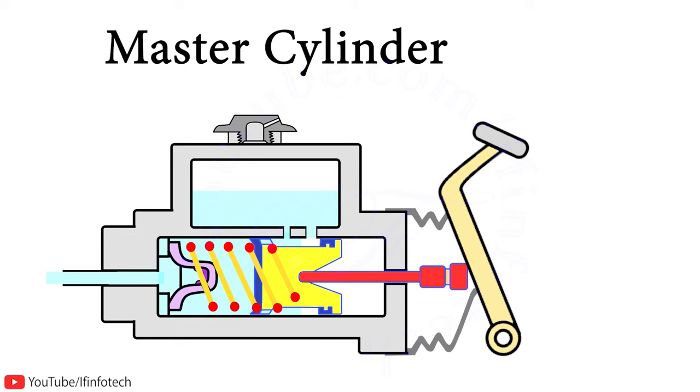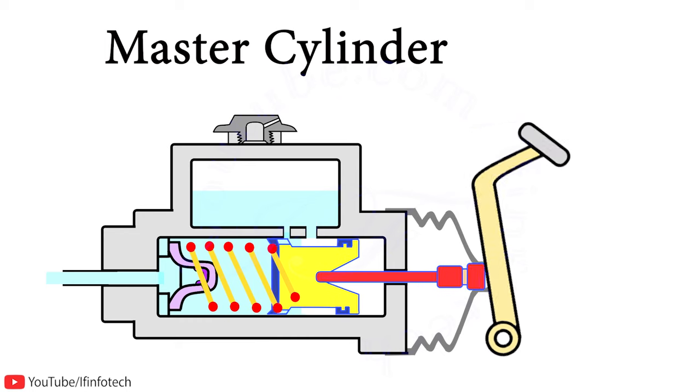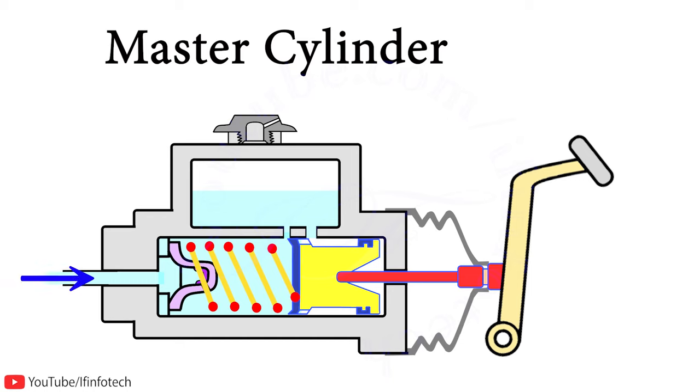In master cylinder, due to spring tension, piston moves towards right. Fluid in pipeline returns slowly inside the compression chamber. This causes a vacuum to form in compression chamber. This vacuum is destroyed by entering fluid from fluid reservoir through inlet port and holes in piston, which deflects the rubber cup and enters the compression chamber.